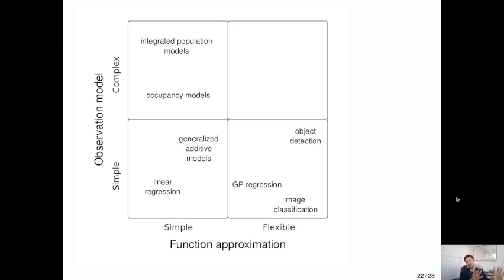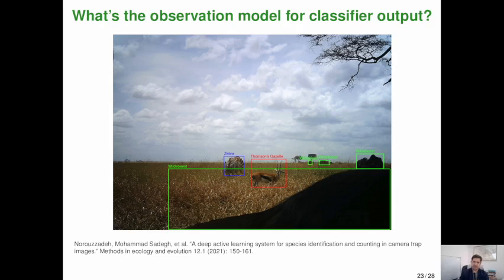All right. So we talked about how you can take a complex observation model, inject a neural network and introduce some more flexible function approximation. But there's another way to end up in that upper right hand quadrant, which would be to take something like an object detection model. Let's say like a camera trap model that detects species and move it up into the complex observation model space. And this is going to allow us to estimate ecological states, ecological parameters, et cetera.